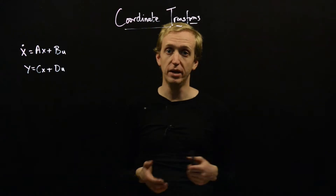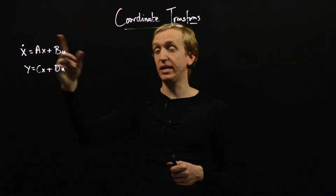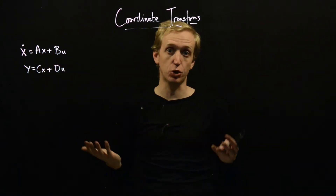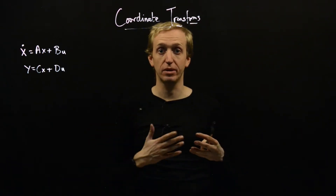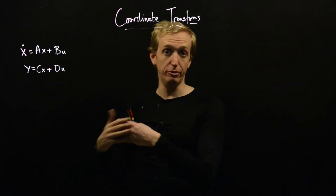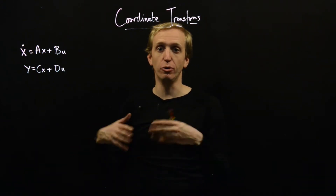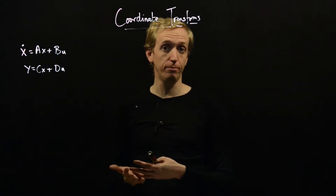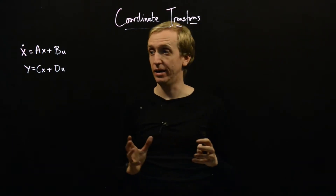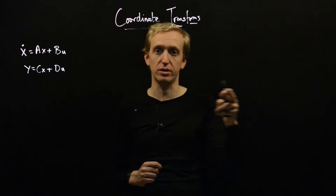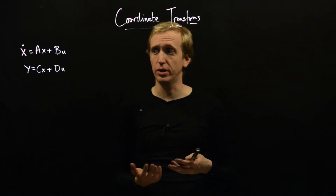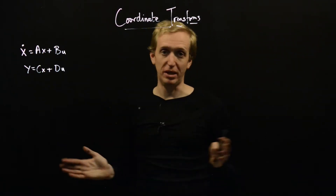We saw the controllable canonical form, and that was an example precisely of this. By making a particular choice of state variable, we can do this in such a way that the system matrices take highly structured forms which illustrate certain features. In that case, we were able to clearly relate a state-space model to its transfer function representation. We're sure that with every state-space model there is a transfer function — we just don't know what it is. But if you put things in controllable canonical form, it's very clear: you just read the denominator polynomial coefficients from the first row of the A matrix, and the numerator polynomial coefficients are in the C matrix in this particular set of coordinates.